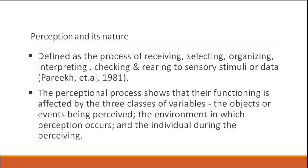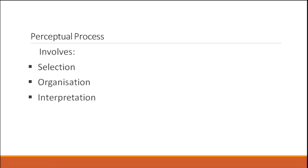The perceptual process shows that its functioning is affected by three classes of variables: the objects or events being perceived, the environment in which perception occurs, and the individual doing the perceiving. Perceptual processes involve three elements: selection, organization, and interpretation.